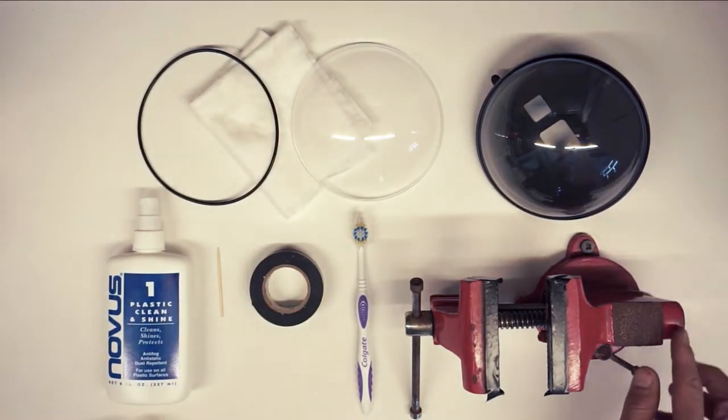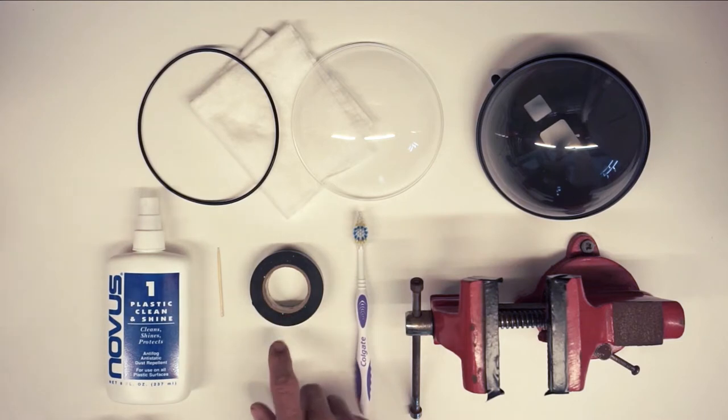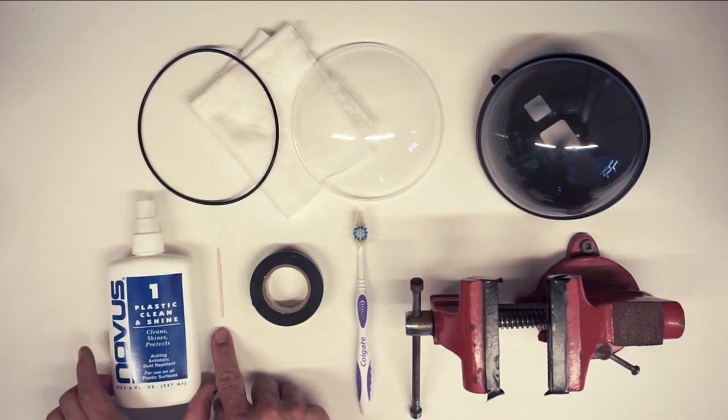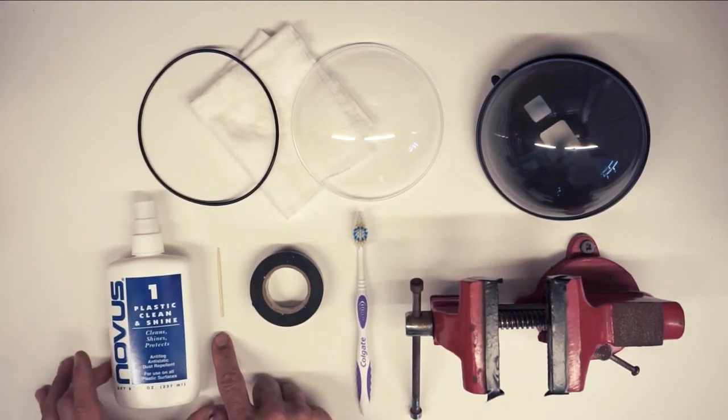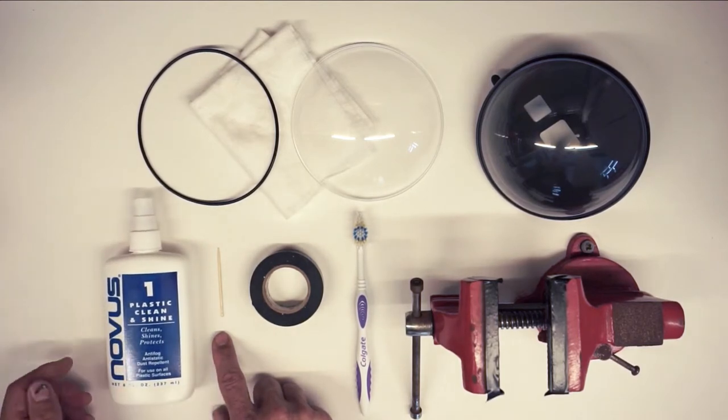The tools you're going to need, most importantly, are a table vise, clean toothbrush, some electrical or duct tape, toothpick, and some plastic cleaner. We like to use the Novus One, it seems to work really well. There may be some other products that work just as good, but this is the stuff that we use.